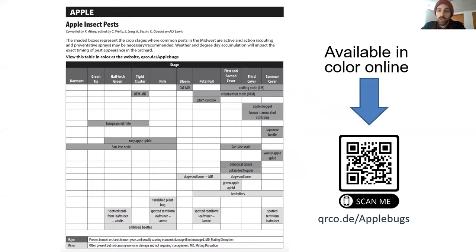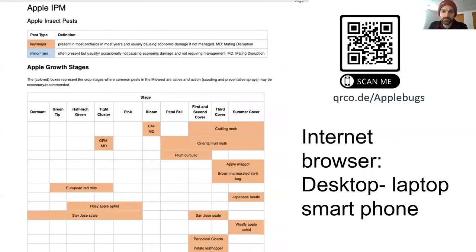We do have a color version of this table that you can access and download and print if you'd like. This is what it looks like — same chart, same information, just in color.